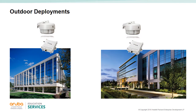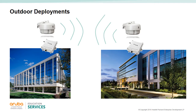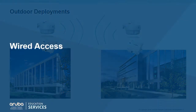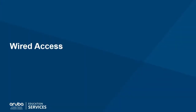The IAP-175 and IAP-274/275 are capable of withstanding harsh outdoor conditions. These IAPs also use the same mesh technology as explained previously, making it extremely easy to link multiple buildings together. The proper antennas and outdoor deployment procedures are still required.